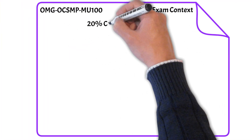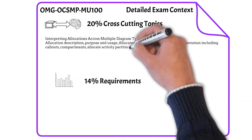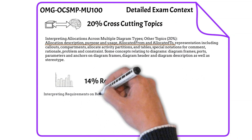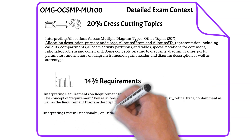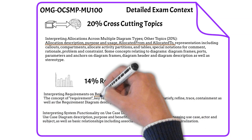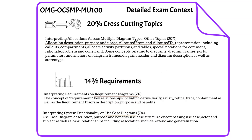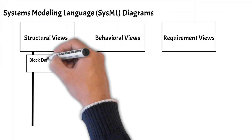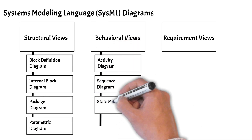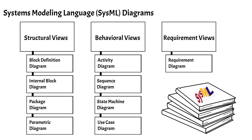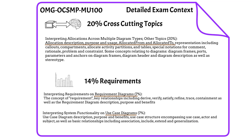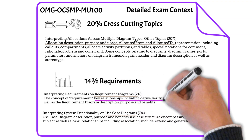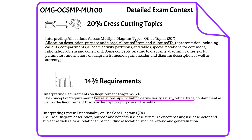The cross-cutting topics cover the allocate relationship and the directionality of that allocate relationship. You will also cover the requirement diagram and use case diagram, completing all nine SysML diagrams. A heavily repeated topic is directionality of relationships — for the requirements diagram you need to understand the arrow direction for derive, verify, satisfy, refine, and trace. For the block definition diagram, you need to understand the generalization and directed composition relationship directionality.